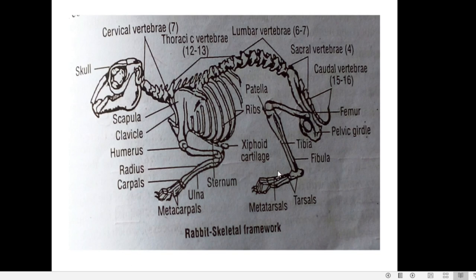The vertebral column is the backbone supporting the body. It is made up of a number of irregular bones called vertebrae. In rabbit there are about 45 to 47 vertebrae which make up the vertebral column. The vertebrae are arranged to form the vertebral column.